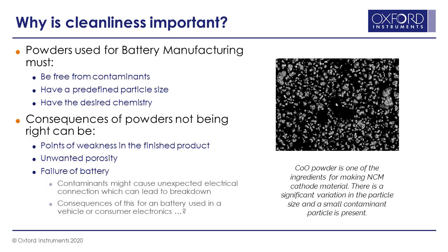The extreme case leads to failure of the battery itself. An electrically conductive particle that comes in and causes a short circuit at an insulation barrier can lead to problems such as thermal runaway. Shown here is an electron image of one of the powder materials typically used in lithium-ion batteries — in this case a cobalt oxide, one of the precursor materials for the cathode. You can see quite a large variation in particle size, and you can also see that there are actually some contaminants in the powder. So it's very important to control not just contaminants but also particle size before starting to process the material.